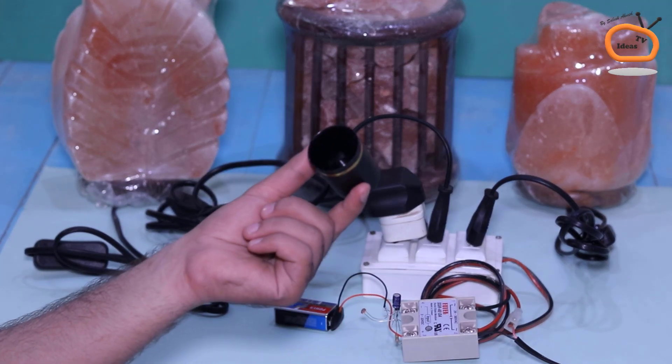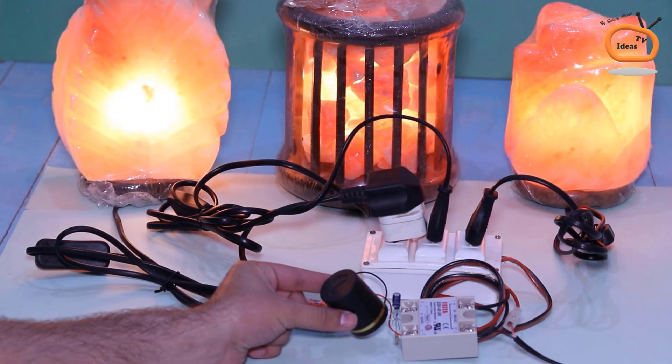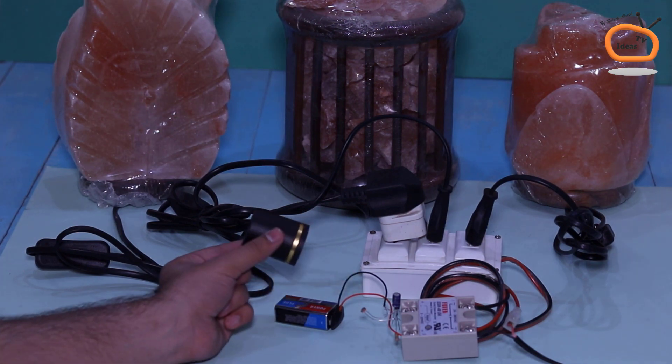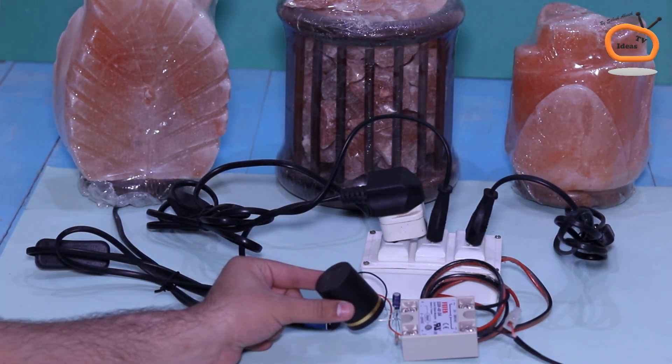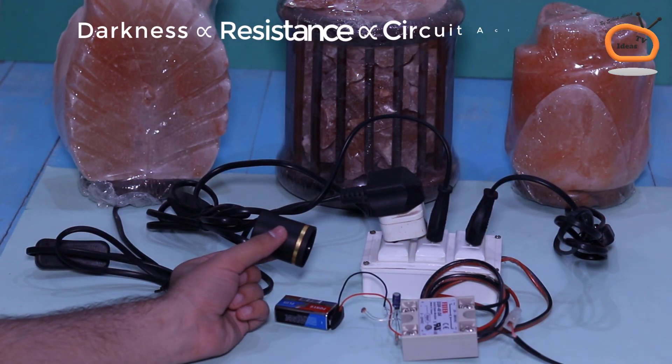Now I am using a bottle cap for testing the circuit. As you can see, when the LDR feels darkness due to cover-up with bottle cap, then the circuit turns on the lamps.